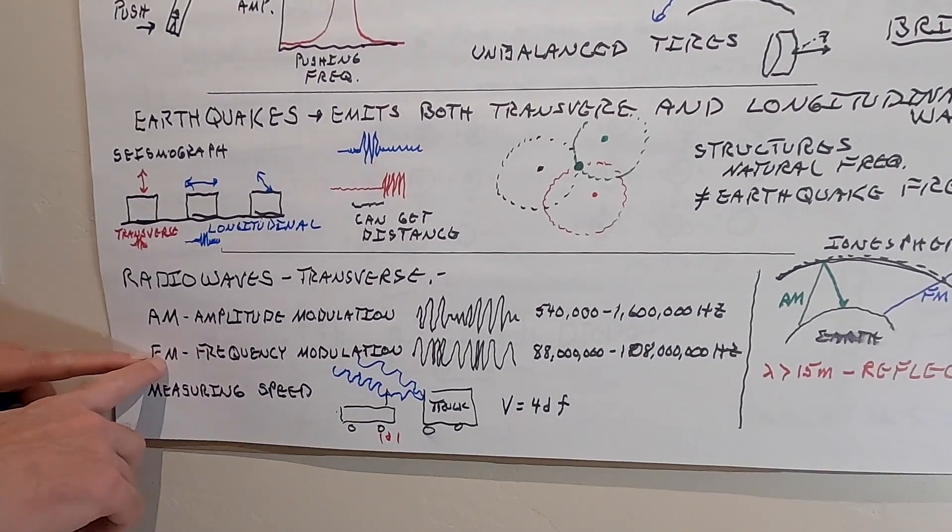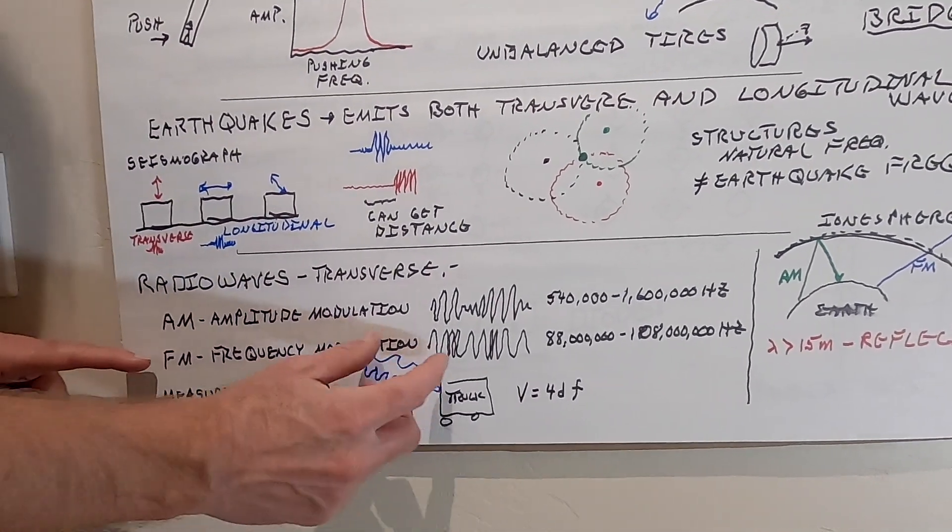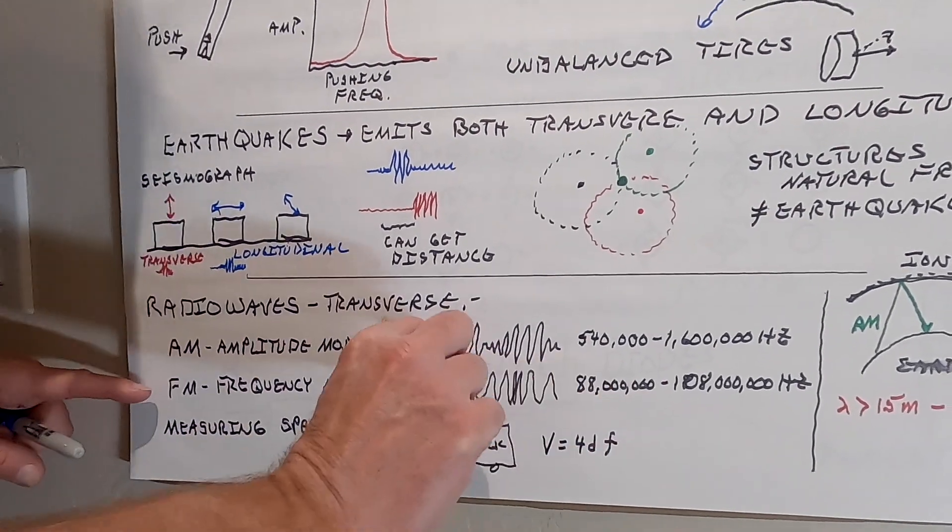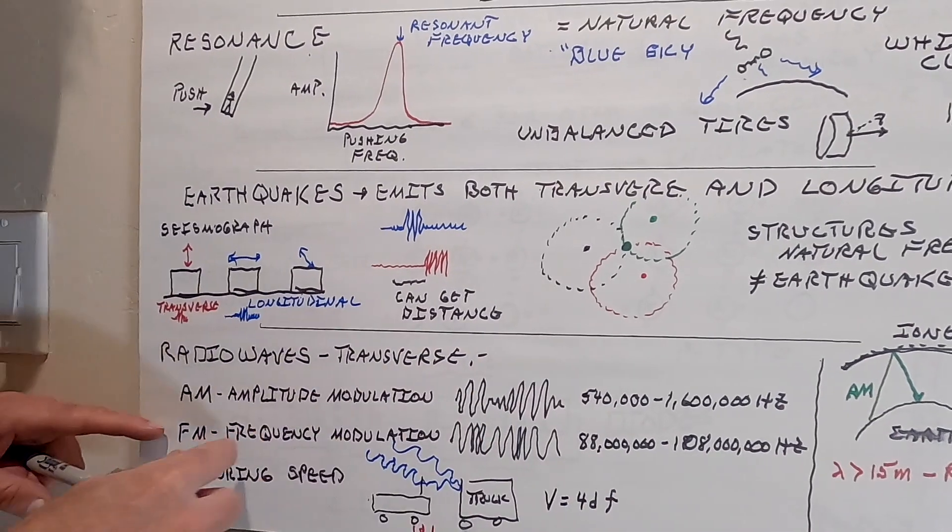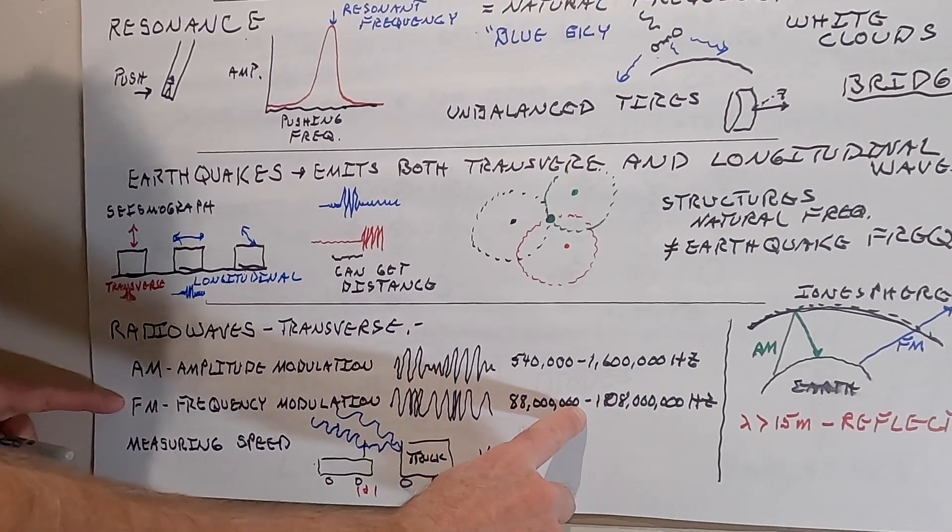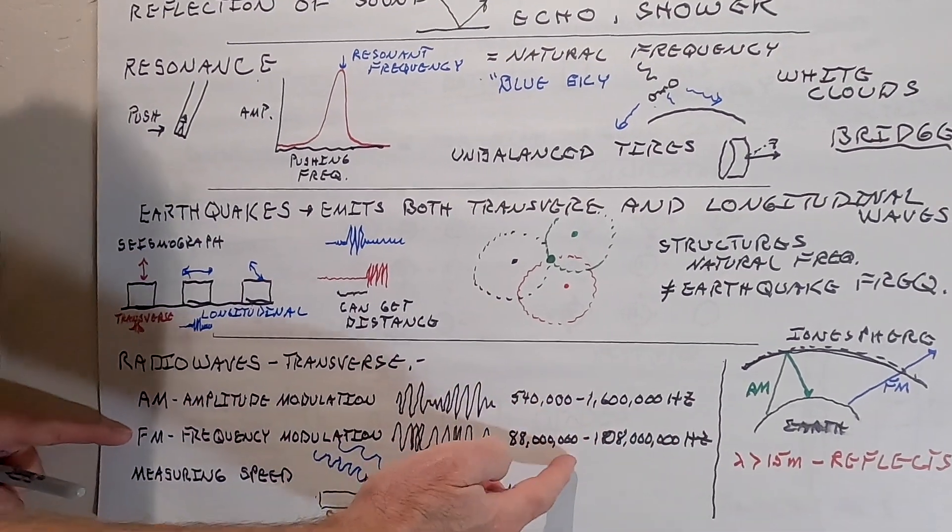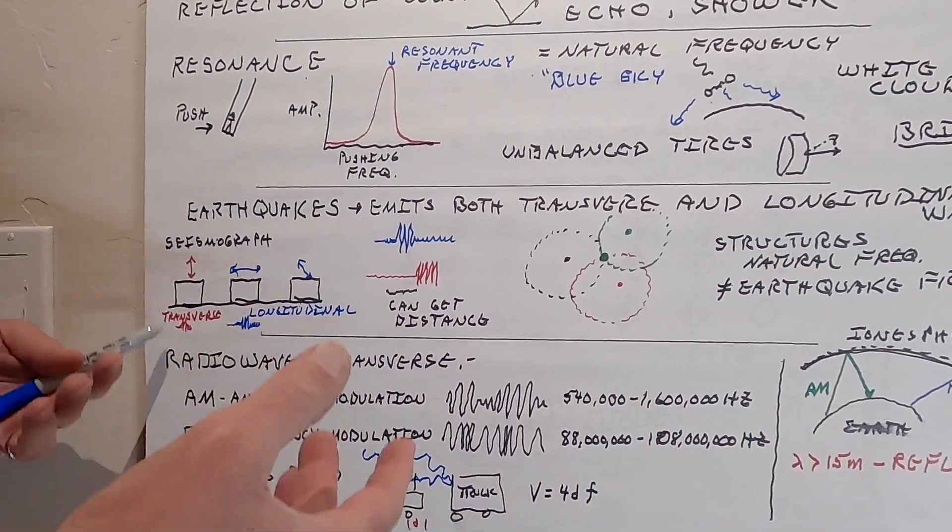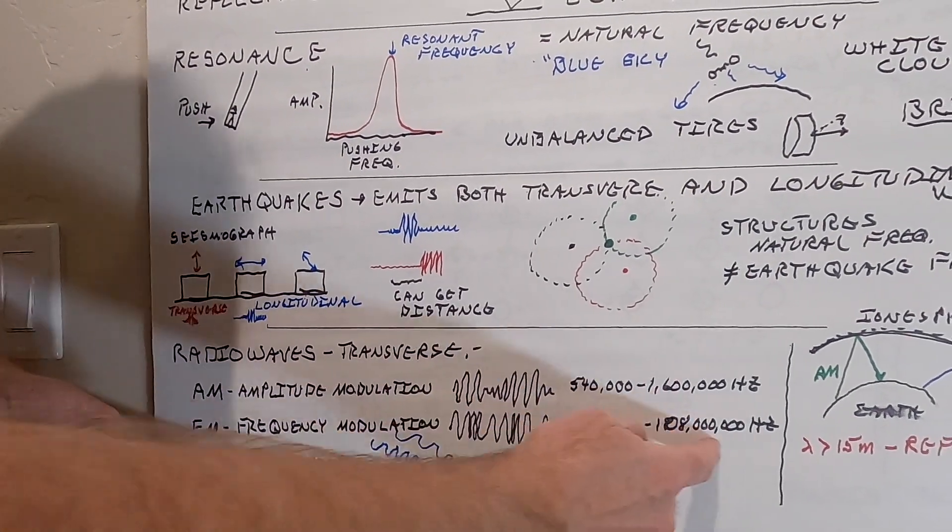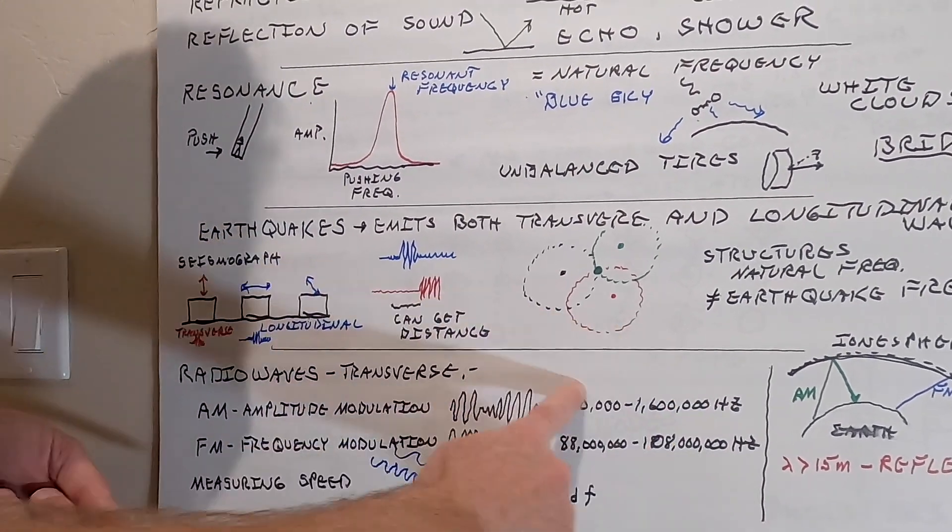Then we have FM, frequency modulation. That way, they're changing the frequency. As the waves get closer, it's further, closer, further, but they're all the same height. This is from 88 on the knob, 88 million, to 108 on the knob, 108 million. Since this is a higher frequency than that, the higher the frequency, the more information you can send. You can send this in stereo. You can't send AM in stereo.